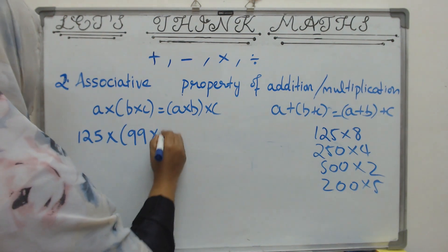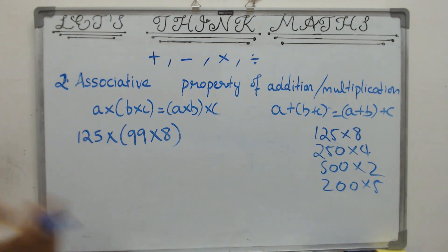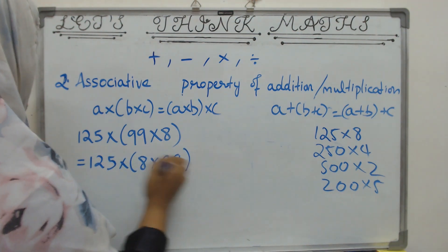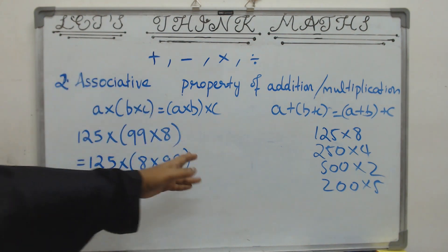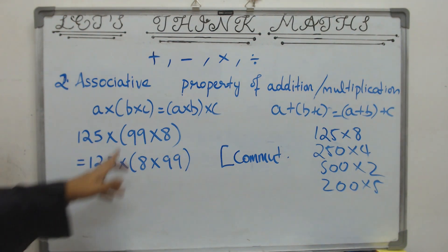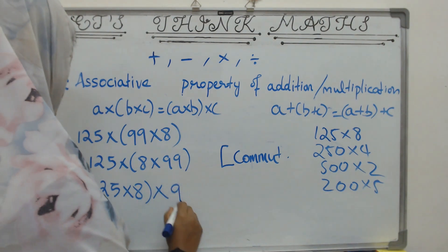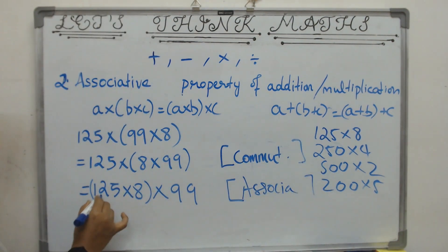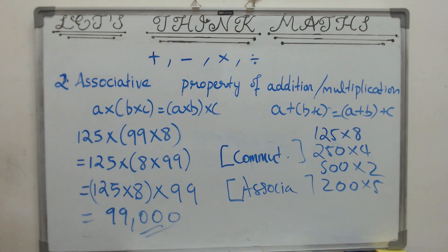Consider 125 into 99 into 8. If you were to do 99 into 8 first and then multiply the whole thing by 125, imagine how much time it would take. But now see: by commutativity, rewrite as 125 into 8 into 99. Remember — if this question comes in an exam, you must mention in a side bracket that you have used the property of commutativity; you will lose marks if you don't. Now by associativity, group 125 into 8 first, which gives 1000. Then 1000 into 99 gives the answer. This is how associativity helps you.